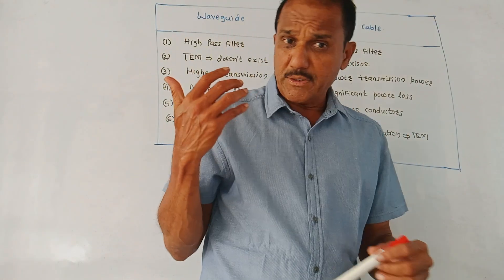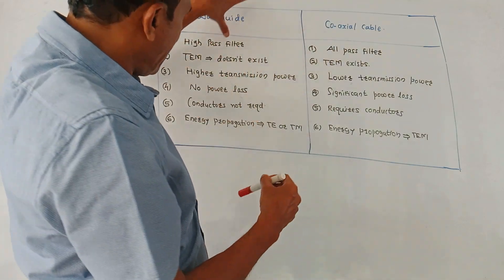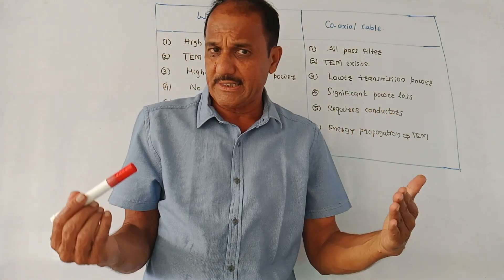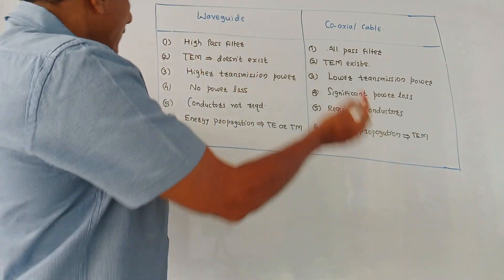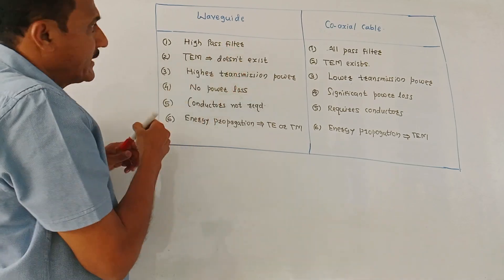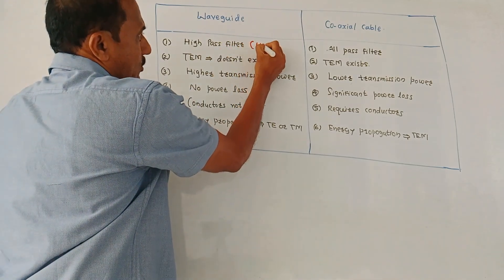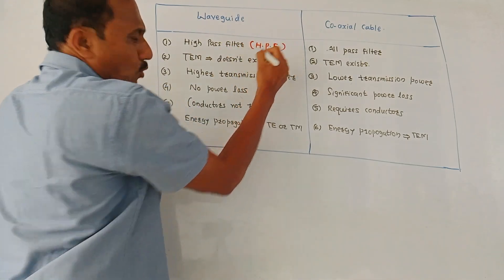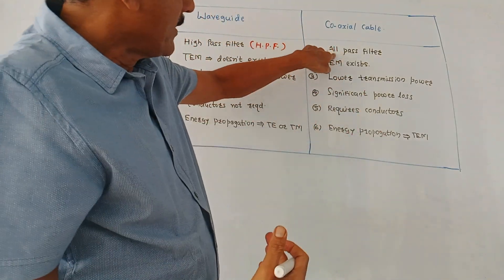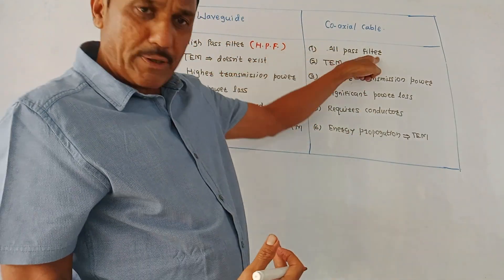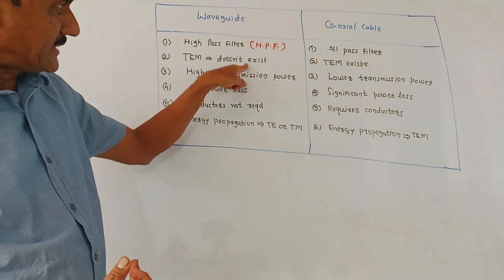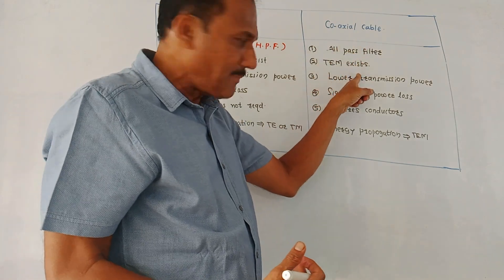An important part is the comparison between waveguide and coaxial cables. For a waveguide, it acts as a high-pass filter (HPF), passing only frequencies above a certain threshold level. Coaxial cable acts as an all-pass filter. Then, transverse electromagnetic mode (TEM) does not exist in a waveguide. In case of coaxial cable, it exists.